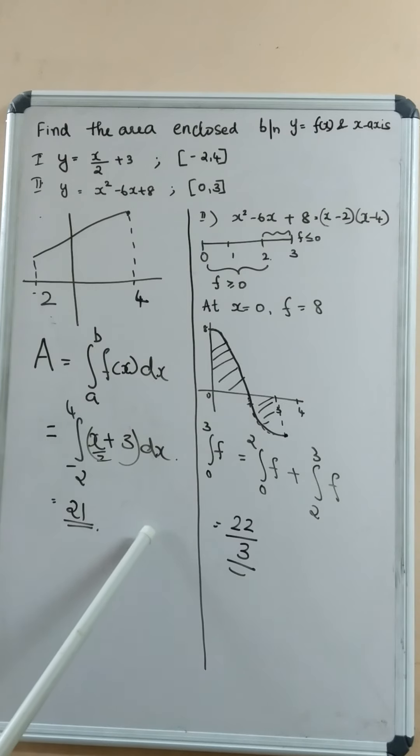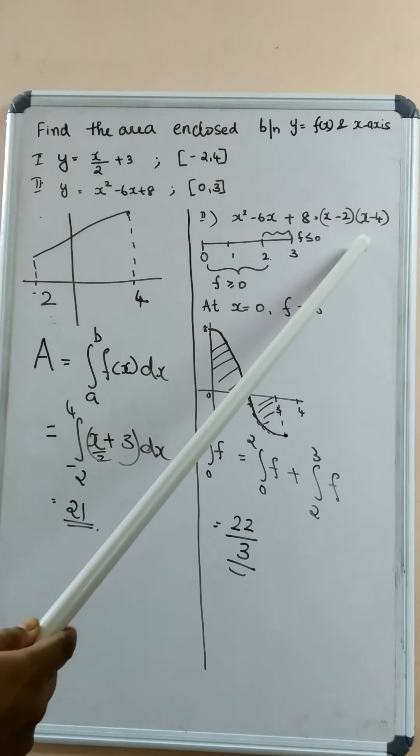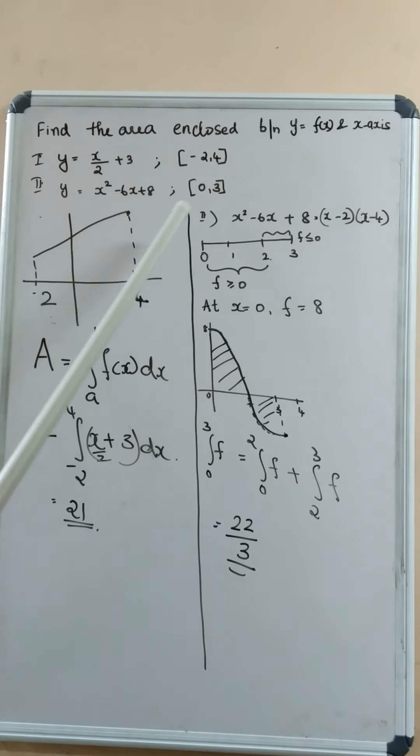Now, we can factorize it as x minus 2 into x minus 4. So, we have to make a closed interval 0, 3.